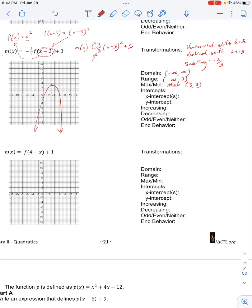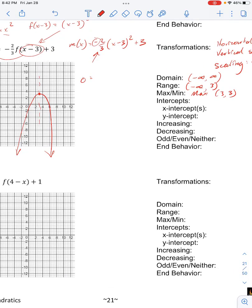We have x-intercepts, so that is when y equals 0. So we set m of x equal to 0, so we have negative 2 thirds, x minus 3 squared plus 3. Moving to the other side, 2 thirds times x minus 3 squared equals 3. Times 3 halves, times 3 halves, so we have x minus 3 squared equals 9 over 2.